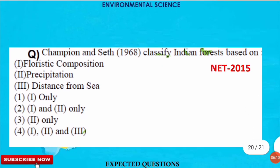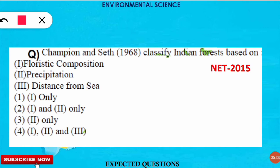The next question is: Champion and Seth (1968) classified the Indian forest based on which of the following characteristics? This question appeared in the NET 2015 examination. The correct option is option 2 — Champion and Seth classified Indian forests based on floristic composition as well as precipitation pattern.